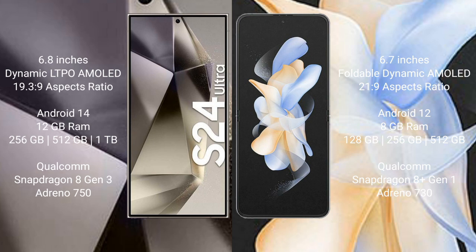Samsung Galaxy S24 Ultra comes with 12GB RAM and 256GB, 512GB, or 1TB internal storage with a Snapdragon 8 Gen 3 and Adreno 750. Samsung Galaxy Z Flip 4 comes with 8GB RAM and 128GB, 256GB, or 512GB internal storage.